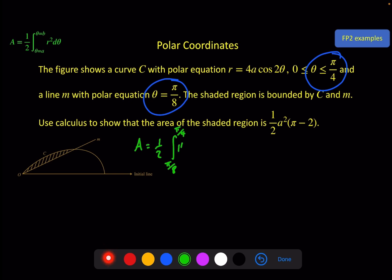So here our area is equal to a half times the integral from π/8 to π/4 of r². And r is this thing here. So if we square that we get 16a² cos² 2θ with respect to θ. The 16a² is just a constant. So I'm going to pull that out and put it with the half. So that gives me 8a² the integral π/8 to π/4 of cos² 2θ.